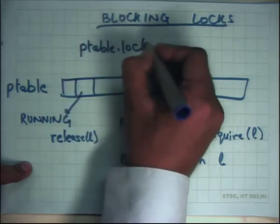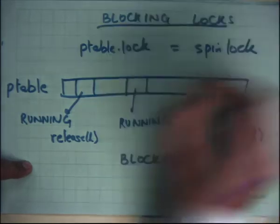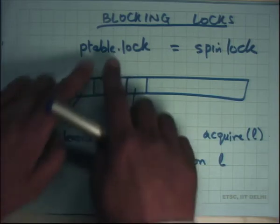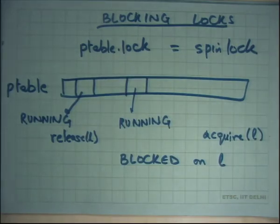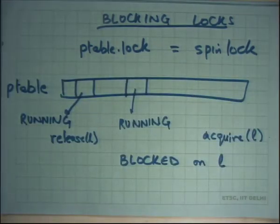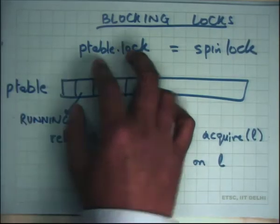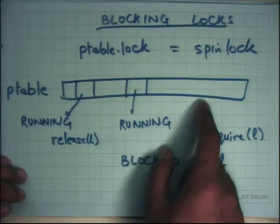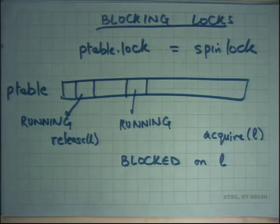The ptable.lock spinlock is needed only for multiprocessors. On a uniprocessor, the ptable.lock equates to a CLI - you just disable interrupts while accessing the ptable so nobody can interrupt you mid-operation. On a multiprocessor you use a spinlock; on a uniprocessor you can do it by disabling interrupts. In both cases what you want is mutual exclusion while accessing the ptable.